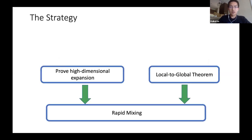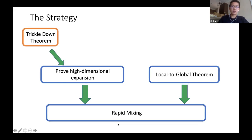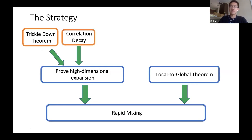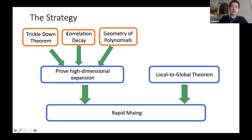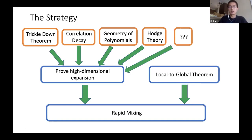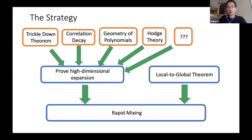You can improve by showing that in the correlation decay regime, the total influence of the root on all vertices at a given level decays as you increase the distance. Showing this implies an O(1) upper bound on total influence. In summary, the strategy is: a local-to-global theorem plus proving high dimensional expansion via methods such as the trickle-down theorem, correlation decay — which is closely related to the geometry of polynomials — Hodge theory used for the log-concave case, and potentially other techniques yet to be discovered.